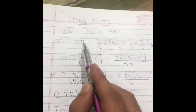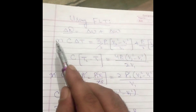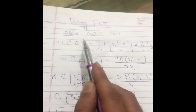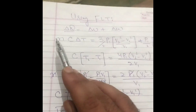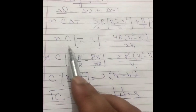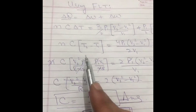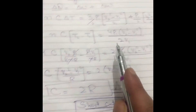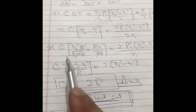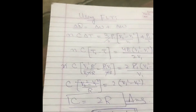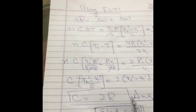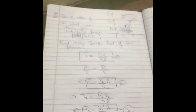So n·C·delta T equals delta U plus delta W. Substituting the values already found and solving, we get C = 2R. This is the final answer — the molar specific heat is 2R — but using the general method of the first law of thermodynamics it took almost two and a half pages to solve this question.